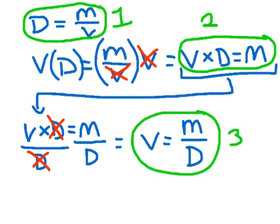And of course, traditionally, if you're given the mass and the volume, and you need to calculate the density, you would use equation number one.